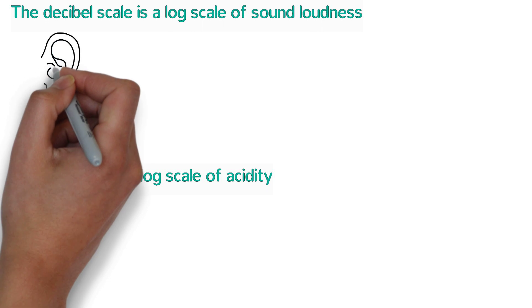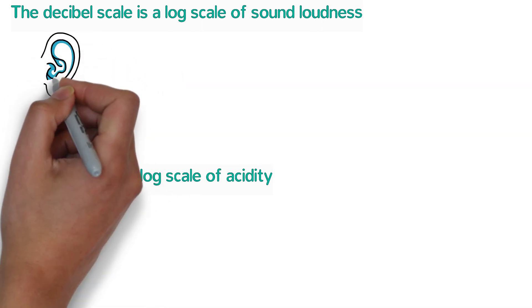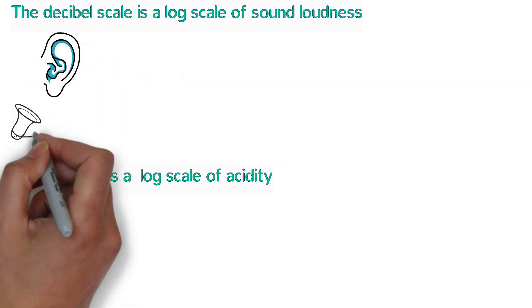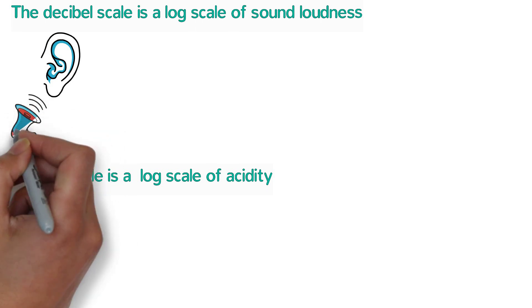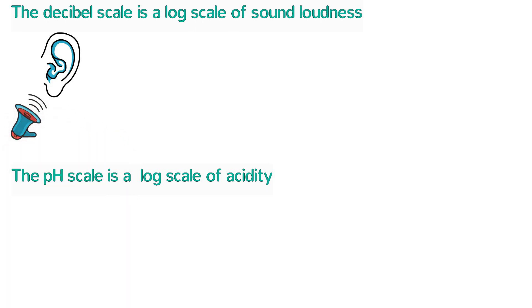The human ear is able to hear a very large range of sound intensities, and our perception of loudness is nearly logarithmic itself. So the bell scale was created to reflect that.